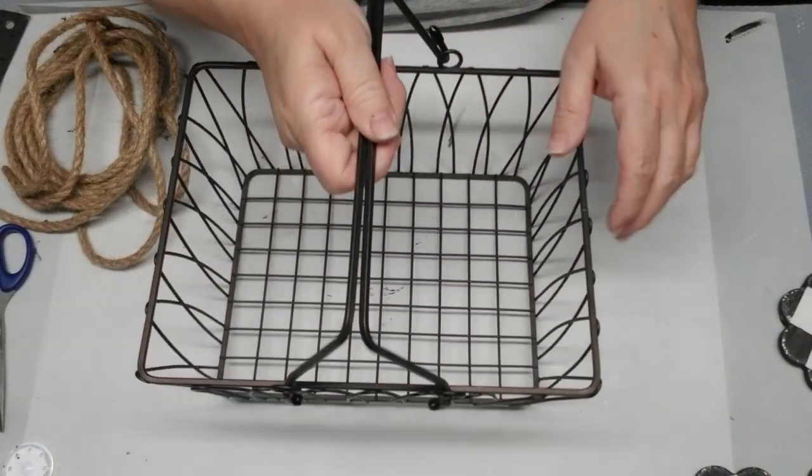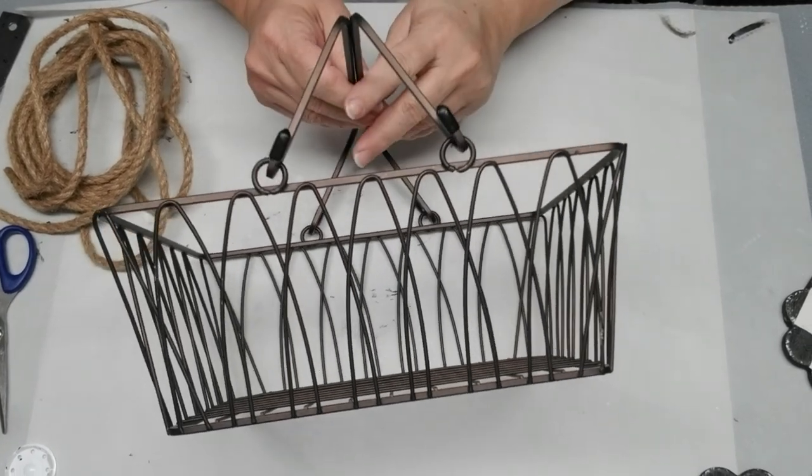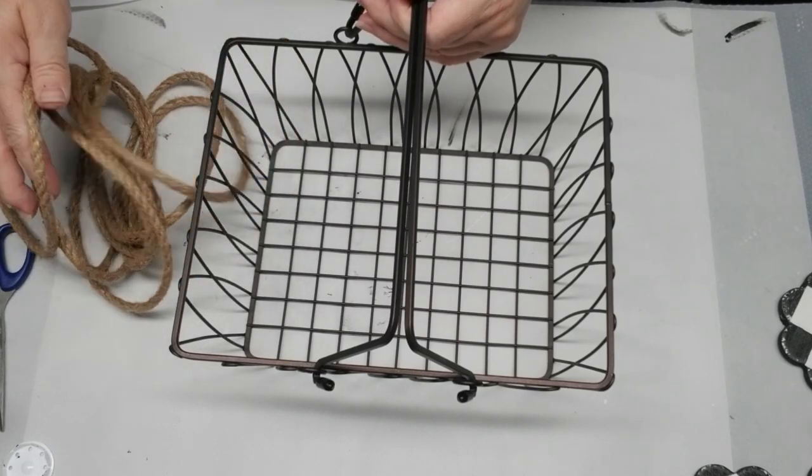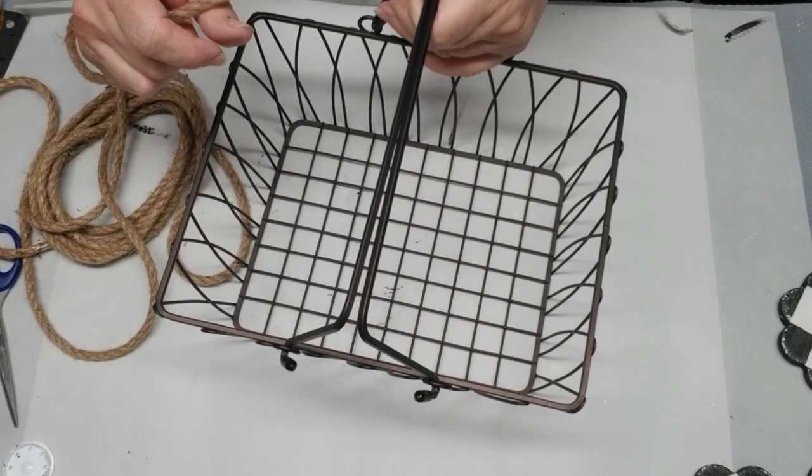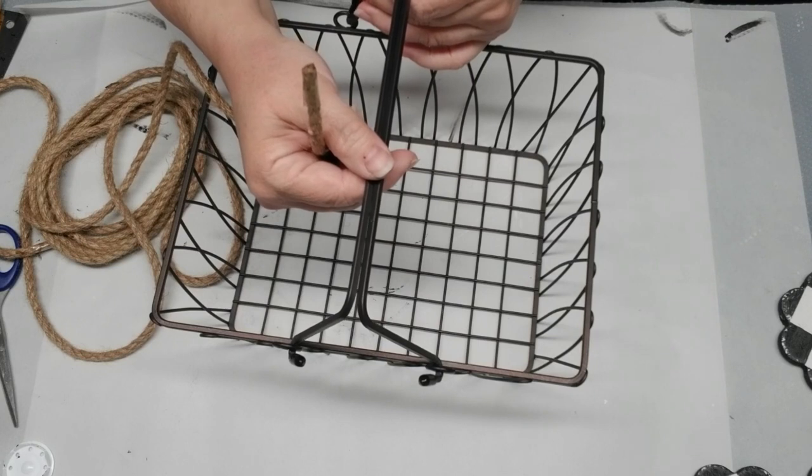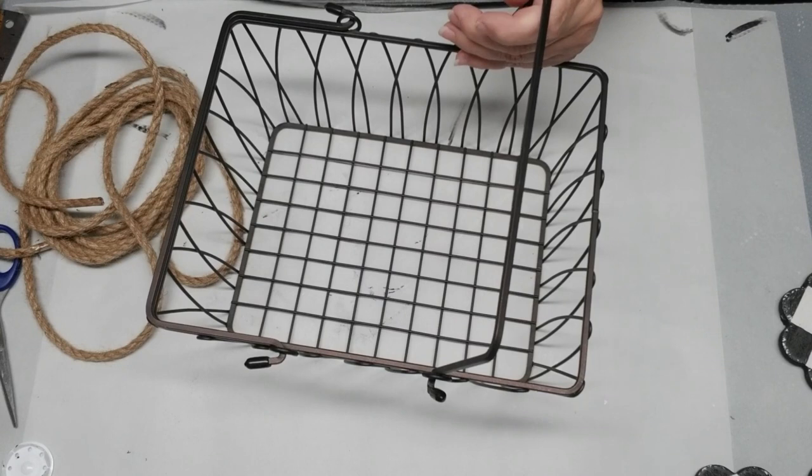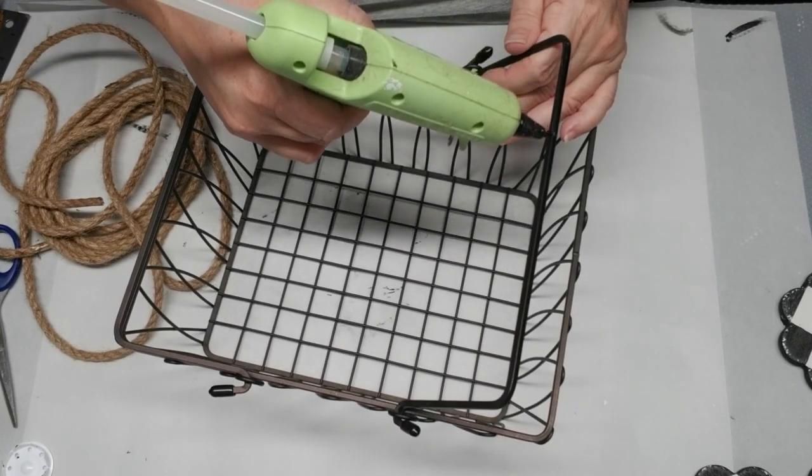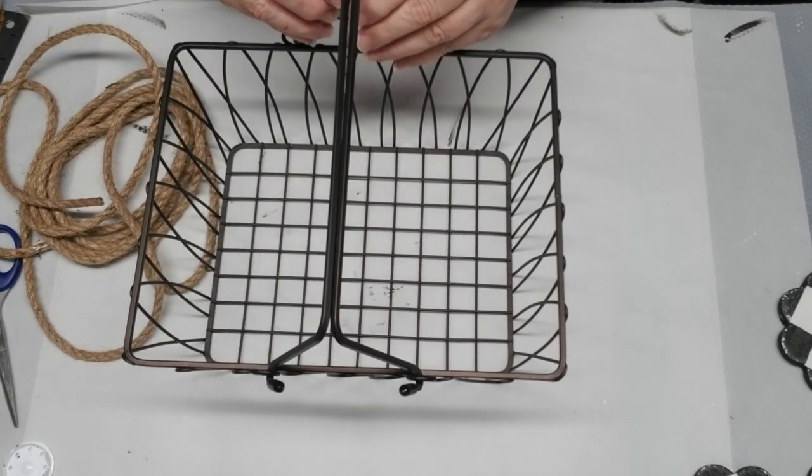Project number two is super simple. I'm taking this wire basket—it's sort of a bronze color. I've had this in my house for probably eight to ten years. The handles on this always fall down, so I wanted to take some of this jute rope from the dollar store and wrap it around so the handle stays upright. I'm going to start just by taking a little bit of hot glue and pulling the two handles together so it makes it easier for me to start wrapping the rope.